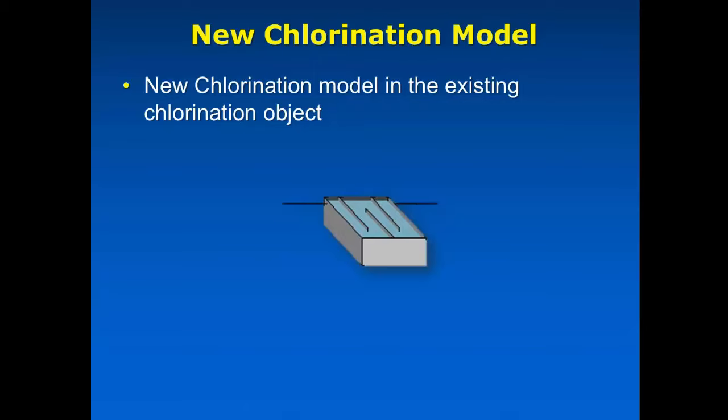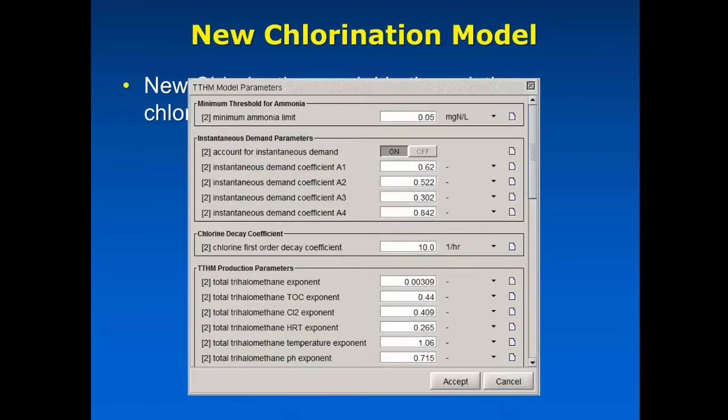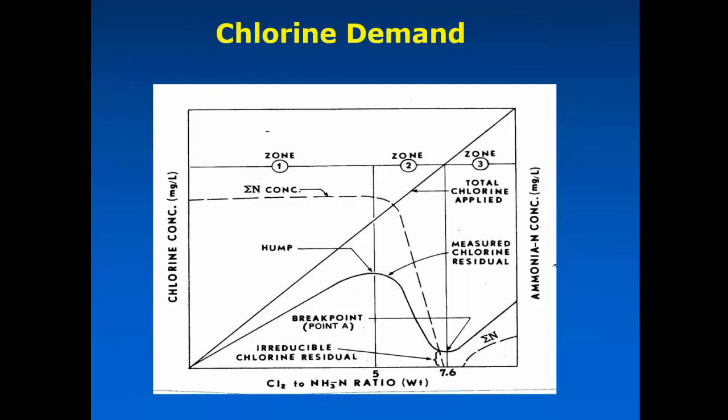Another interesting model that we've been working on, again, for some time, and we're happy to finally have it released in the software, is our chlorination model. This was part of a project that we have done over the past couple of years with one of our clients. We have a new chlorination model that exists in the existing chlorination object. We had a simple UV model that was in there before, and a simple model for doing just the disinfection side. But now this new model actually does model the formation of chlorination byproducts and disinfection byproducts that you would get from adding chlorine to a system where there's some ammonia present. We are going to do a webinar just on this particular part of the model in about a month's time.